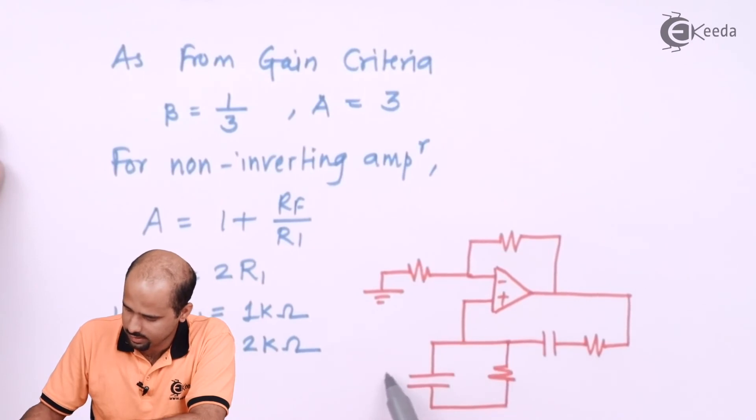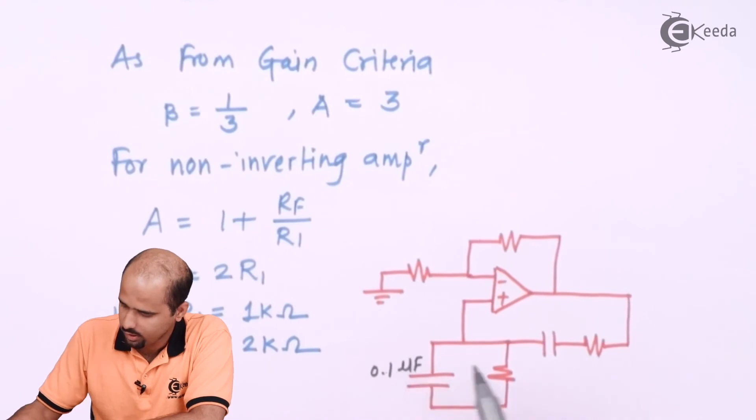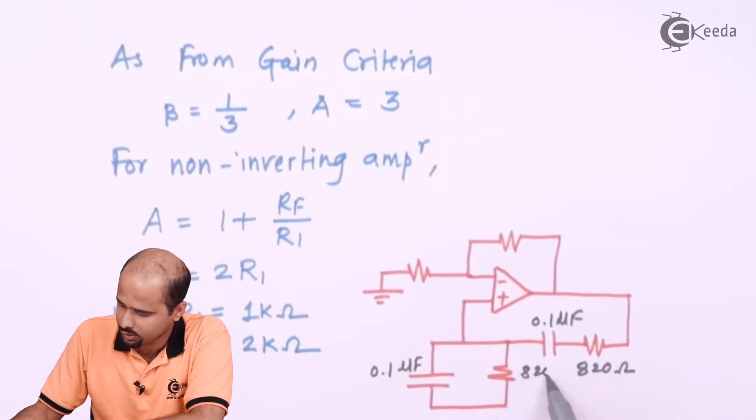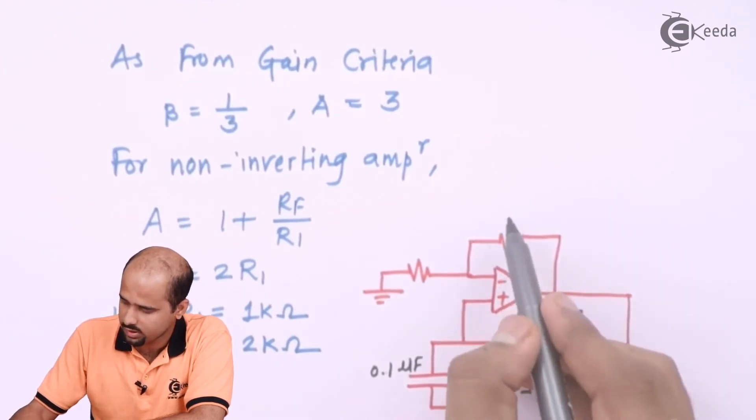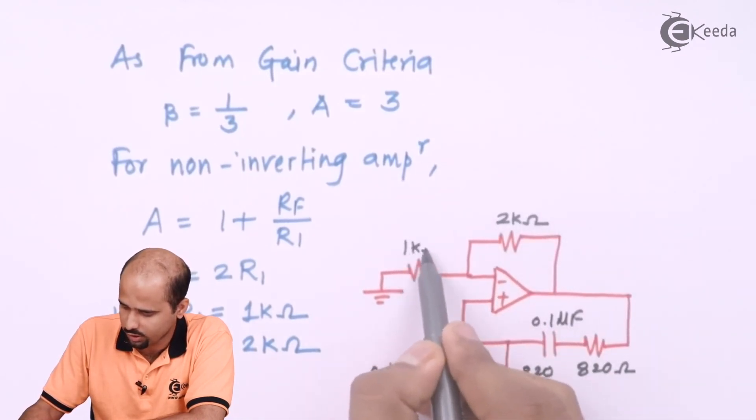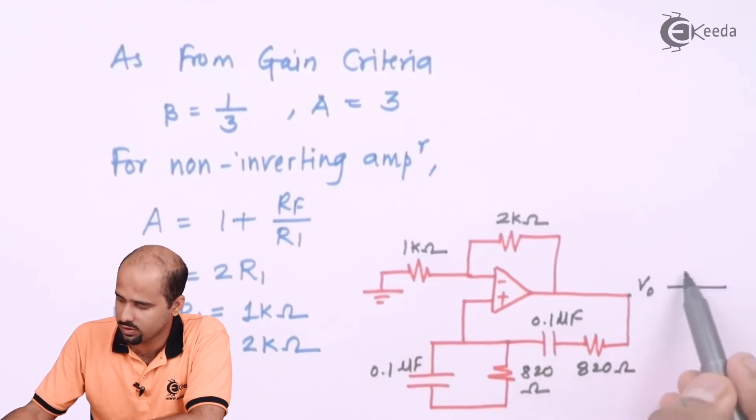You can say this is C - I will say that it's nothing but 0.1 microfarad. This is also 0.1 microfarad. This is 820 ohm, this is also 820 ohm. This RF is of 2 kilo ohm and this R1 is of 1 kilo ohm.